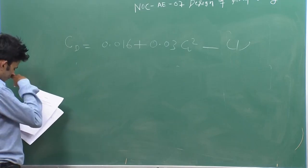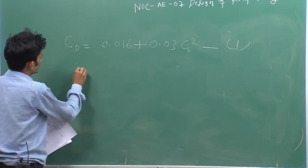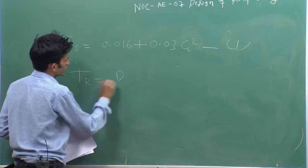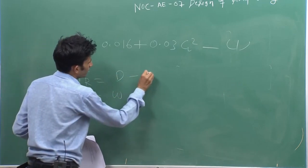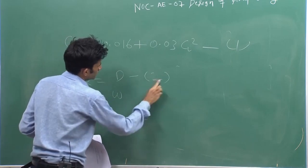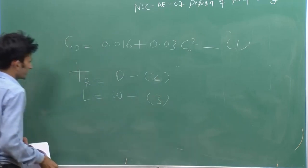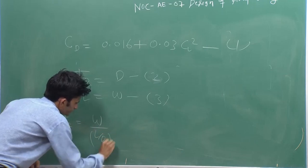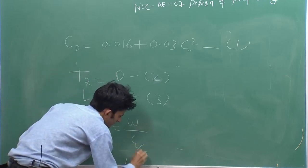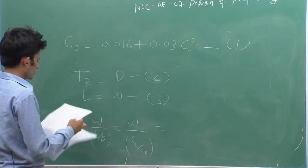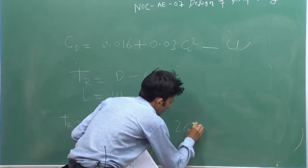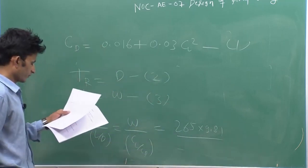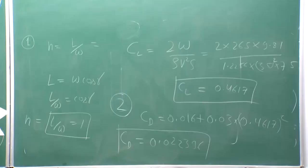In the third question, you have to find the thrust required. Since the climb angle is small, you can approximate as cruise level flight — thrust equals drag and lift equals weight. Manipulating these equations gives thrust required equal to W divided by (L/D), or W divided by (CL/CD). W is 265 kg converted to Newton. CL/CD equals 0.4617 divided by 0.022396, giving approximately 20.615.